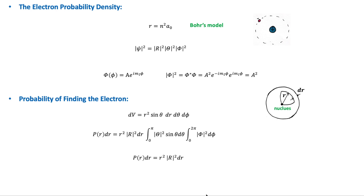Second, quantum theory shows that it is not valid to think of the electron as revolving around the nucleus in any conventional sense, because the probability density — absolute psi squared — of finding the electron is independent of time and varies from one place to another.